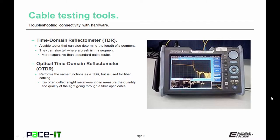Then there is the time domain reflectometer. This is a cable tester or certifier that can also determine the length of a segment. They can also tell where a break is in a segment, which can then allow you to put in a splice. They are more expensive than a standard cable tester or certifier.